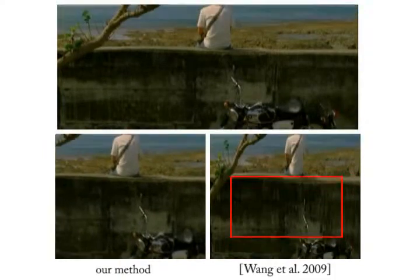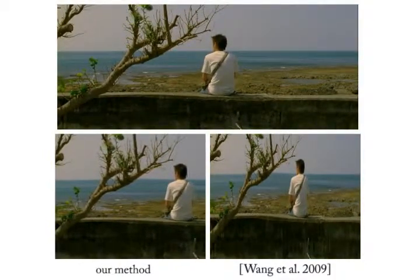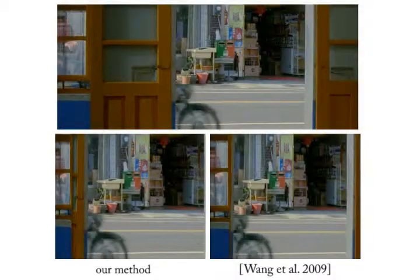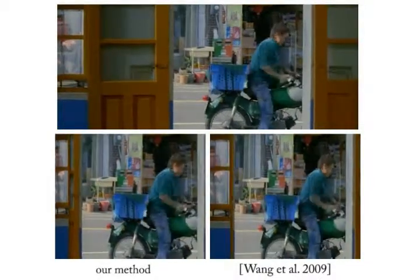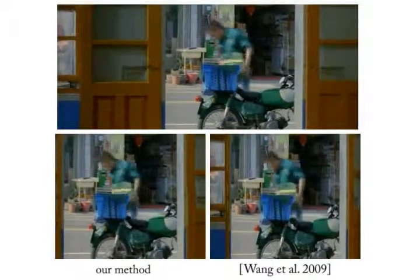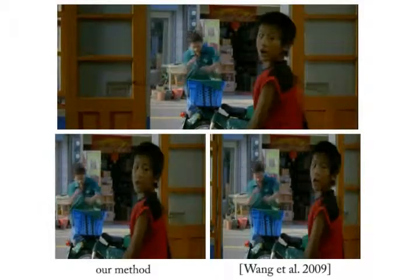Even worse, if the method of Wang and colleagues fails to detect the moving objects, waving artifacts occur. Please notice the wall and people in these examples. In contrast, our method requires neither camera alignment nor explicit separation of moving foregrounds from background, and thus successfully retargets these examples.